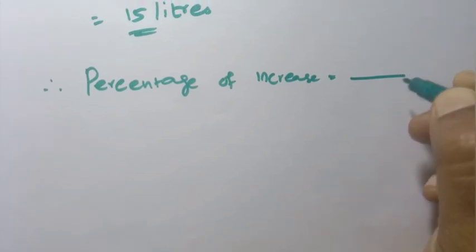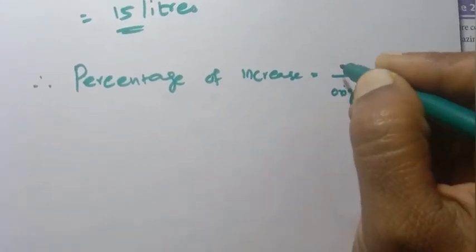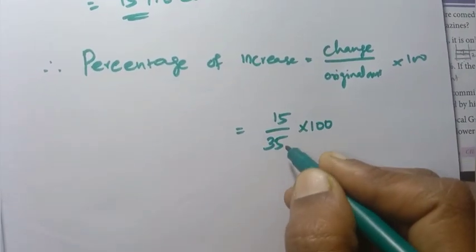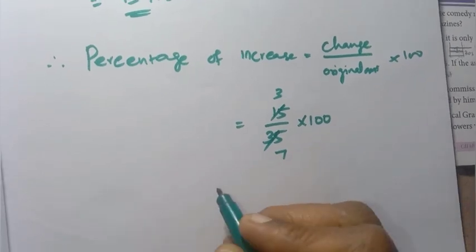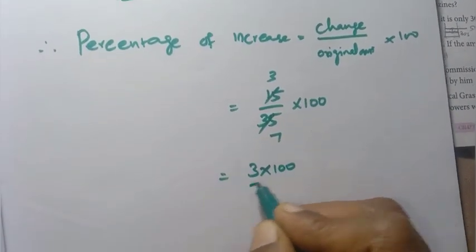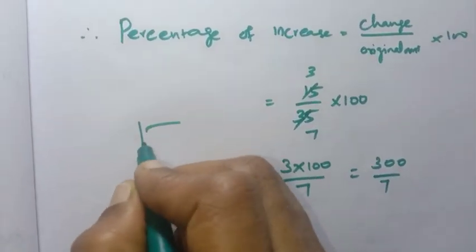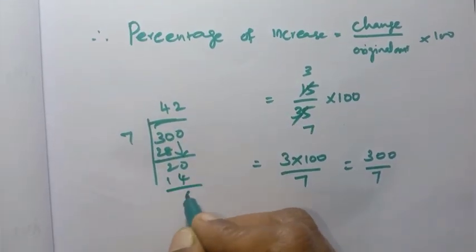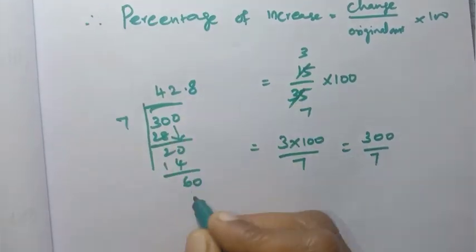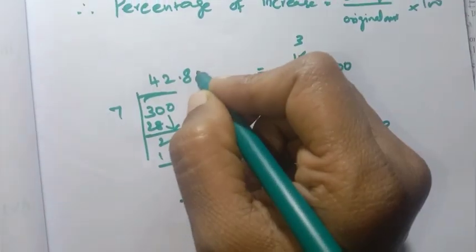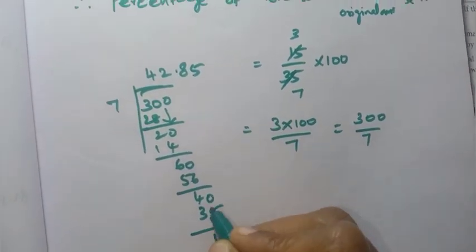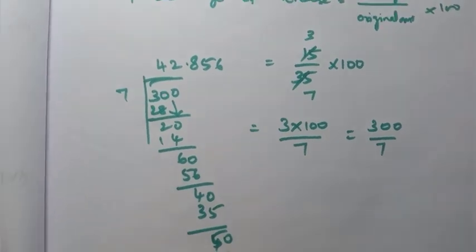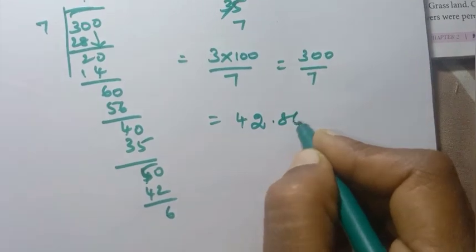Percentage of increase equal to change divided by original amount, into 100. So 15 by 35 into 100. 5 threes are 15, 5 sevens are 35. Equal to 3 into 100 by 7. So equal to 300 by 7. Dividing: 7 fours are 28, remainder 2 — 7 twos are 14, remainder 6 — 7 eights are 56, remainder 4 — 7 fives are 35, remainder 5 — 7 sixes are 42, remainder 6. Equal to 42.86 percentage.